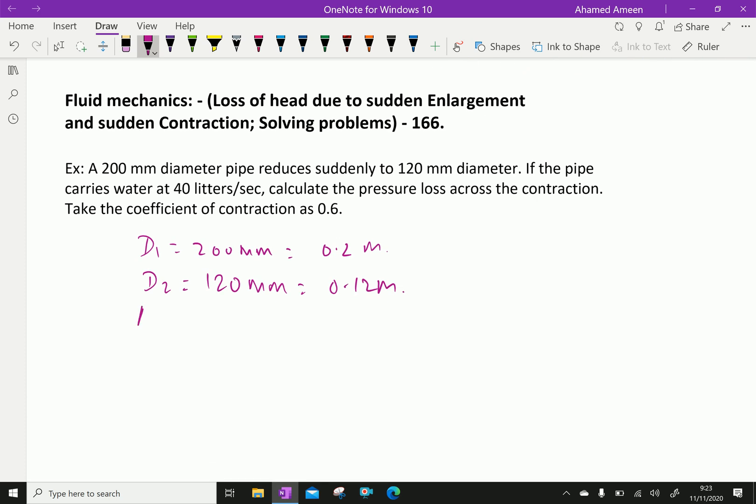Cross area of larger, that is pi by 4, 0.2 square equals 0.0314 meter square.